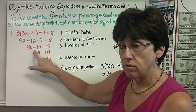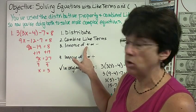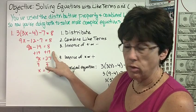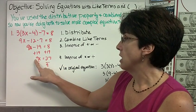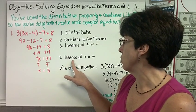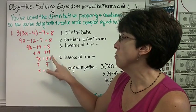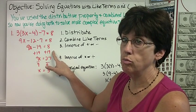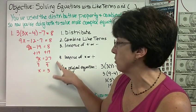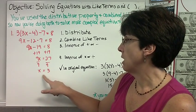Now that I only have two terms on this side of the equation, I'm going to do the inverse of addition or subtraction, depending on what my problem has. In this case it's subtraction, so the inverse is addition. Add 19 to both sides, and now I have 9x equals 27. Divide both sides by 9, and x equals 3. This is the only step you may skip showing me, but you must show the adding or subtracting step.